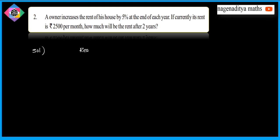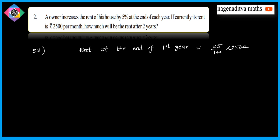Rent at the end of the first year: apply 5% increase, so multiply by 105/100. That gives 105/100 × 2500 = 2625. So the rent at the end of the first year is 2625.